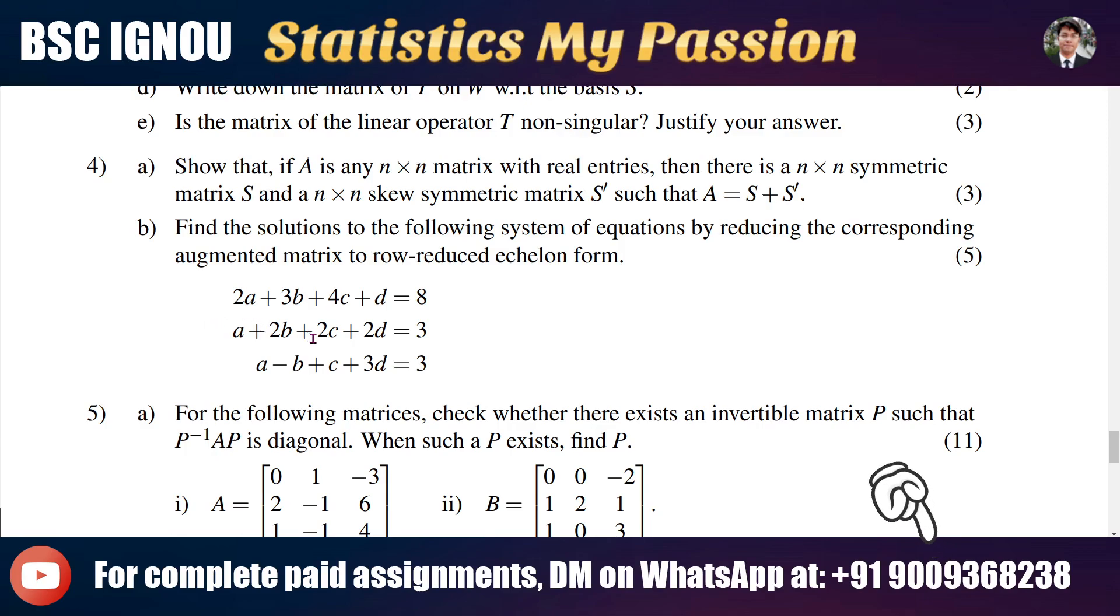Part B says that find the solutions to the following system of equations by reducing the corresponding augmented matrix to row reduced echelon form. This question is five marks and we have a different variety of system of equations.